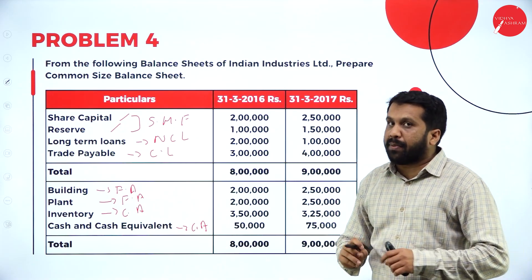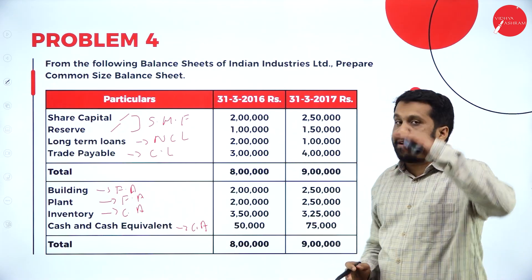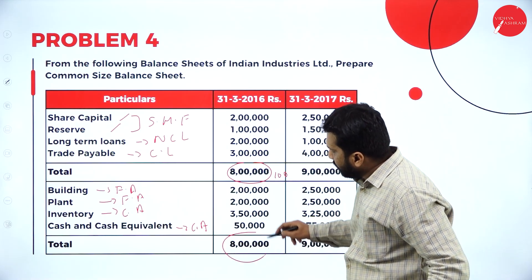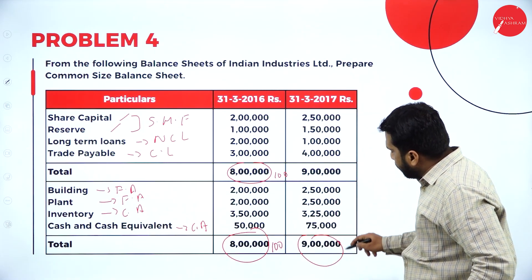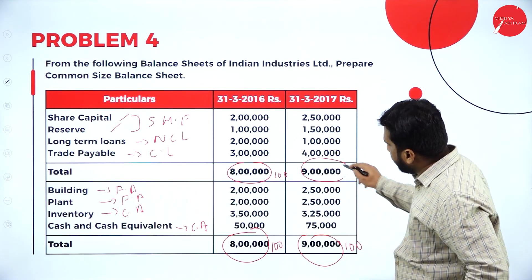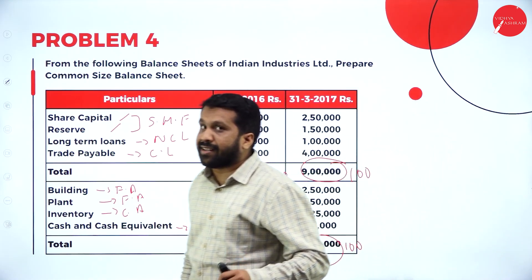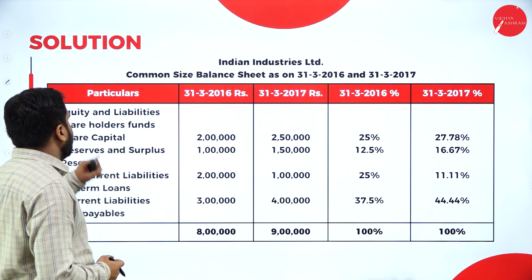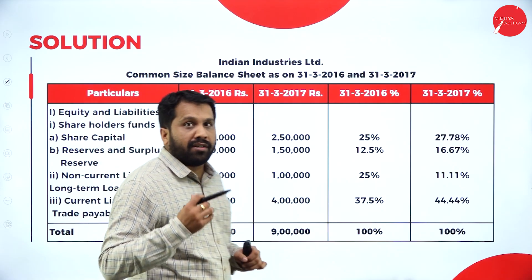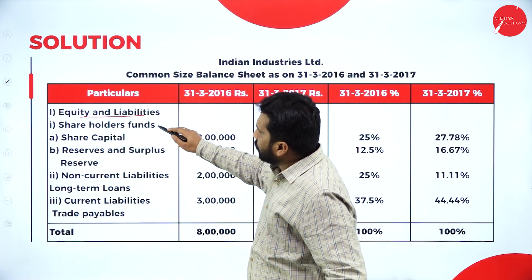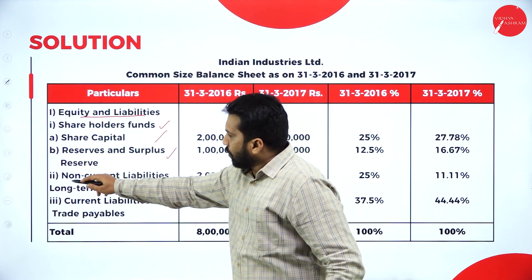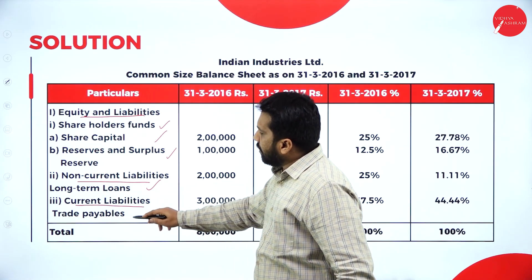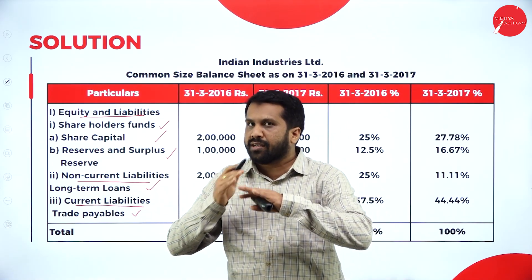What is common size? We are not doing comparative — we are not comparing. What is common? The total will be called as 100% for each year. Indian Industries Limited common size balance sheet. They have done bifurcation: equity and liability, under that shareholders fund with share capital and reserve and surplus; non-current liability with long-term loans; current liability with trade payable. This kind of bifurcation you have to do.